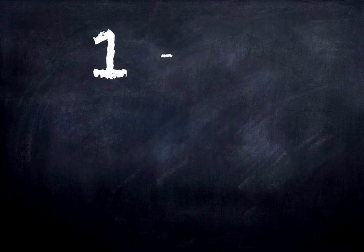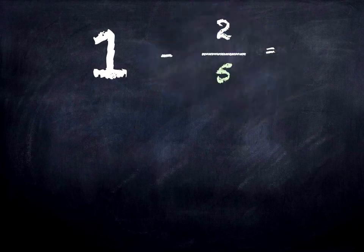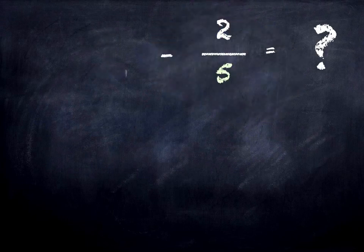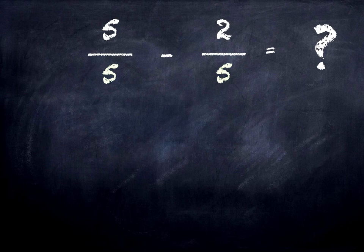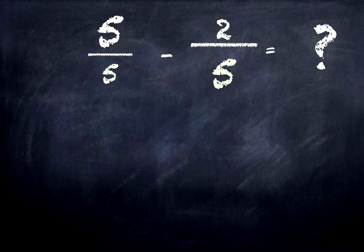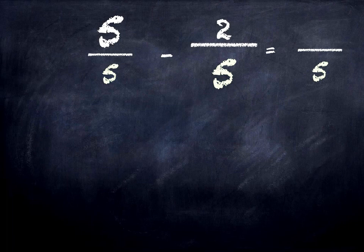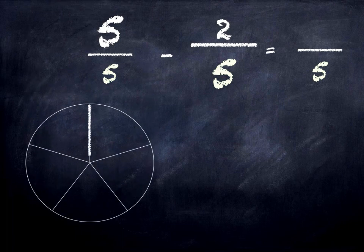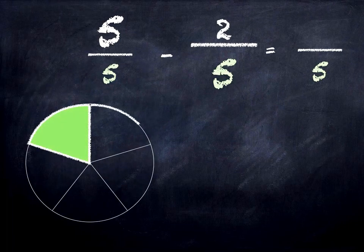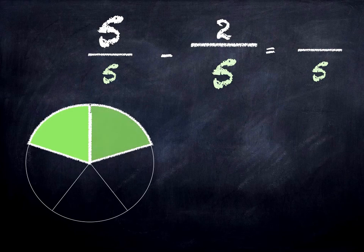Here's our first problem: 1 take away 2 fifths. Now we know that 1 is the same as 5 fifths, and we're dealing with fifths, so our answer will be in fifths as well. Here's our whole, chopped into 5 equal pieces — 5 fifths.